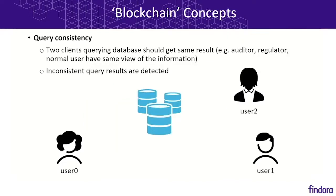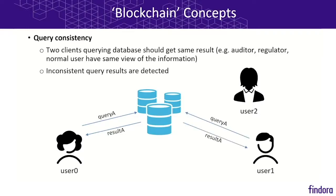Query consistency says that two clients querying the database should get the same result. Whether it's an auditor, a regulator, or a normal user, they should all have the same view of the information in the database. Inconsistent query results should be detectable. So if user 0 sends query A and gets result A, user 1 sends the same query and gets result A, but user 2 gets result Z — that should be detected.